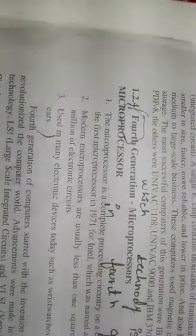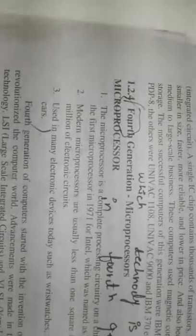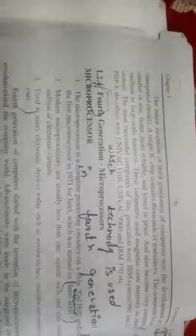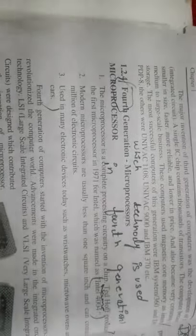Fourth generation computers use magnetic core as internal storage. Most of these computers use microprocessors. The microprocessor is a complete processing circuit on a chip. Ted Hoff produced the first microprocessor in 1971 for Intel, which was named the Intel 4004.